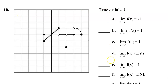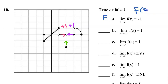For problem number 10 we have some true or false questions. Part A: the limit as x approaches 2 equals negative 1. We're talking about an x value of 2. As we approach 2 from the left we are approaching a y value of positive 1, and from the right also positive 1. So the limit equals positive 1, not negative 1 — that is false. They were trying to trick us with a dot down here; if they had asked for f(2) that would equal negative 1 because of the dot.